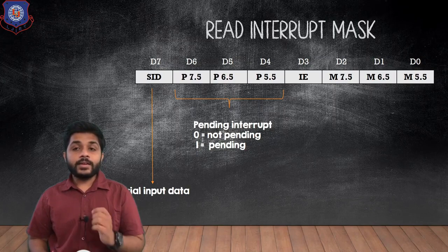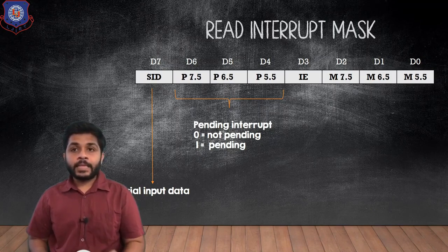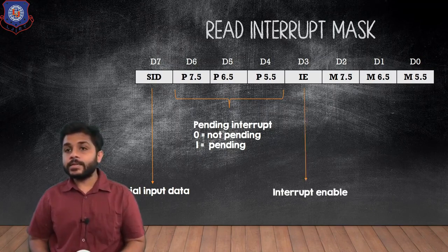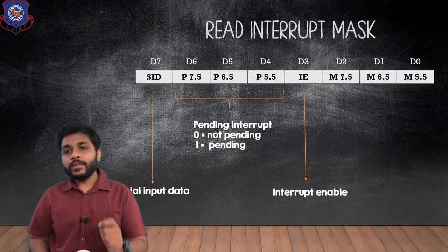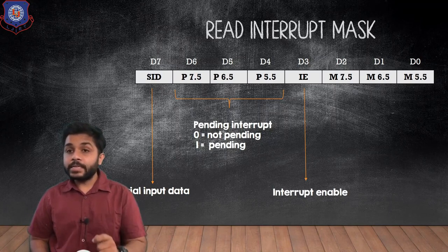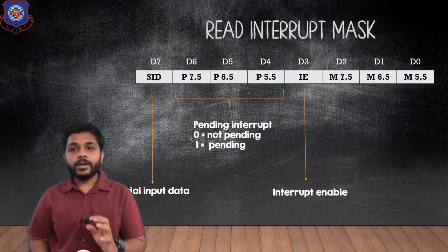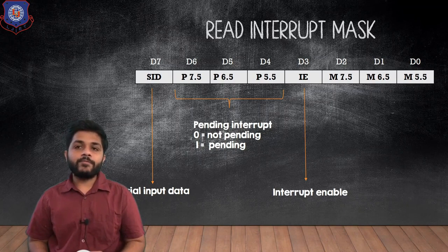The next bit is D3, which represents interrupt enable. When the value of the interrupt enable bit is 1, it means the interrupt enable flip-flop is set.